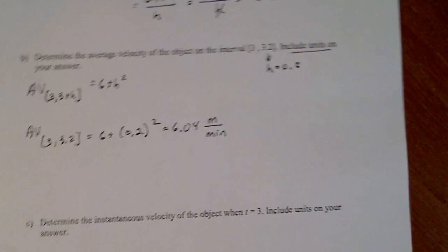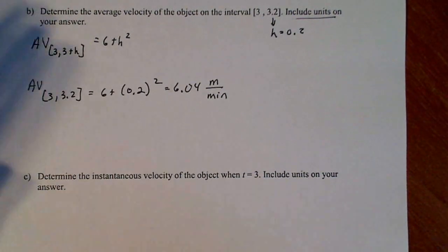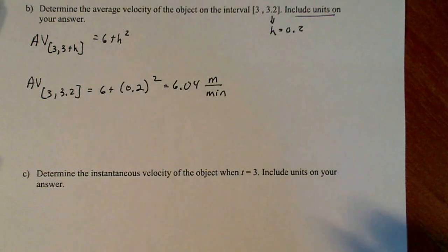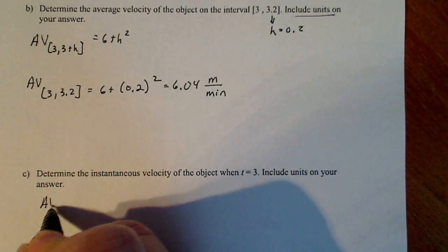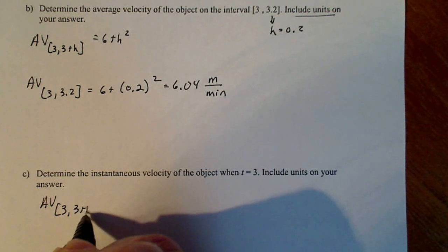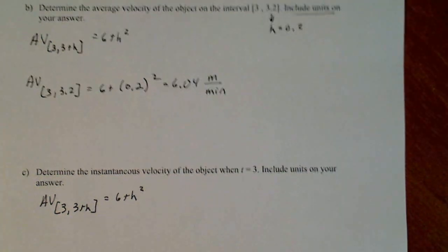Now let's do this last problem. Now it says determine the instantaneous velocity of the object where t equals 3, include units on your answer. Now I'm going to use again this idea that my average velocity from 3 to 3+h was defined as 6 + h. We simplified it down to that formula.